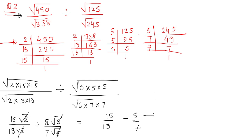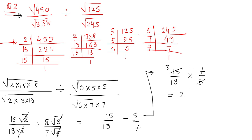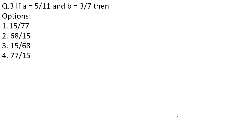So this gives me 15/13 ÷ 5/7. I change division to multiplication and flip the second fraction: 15/13 × 7/5. This simplifies to 3 × 7 / 13 = 21/13. That is your answer — option number 2.